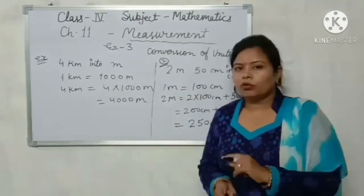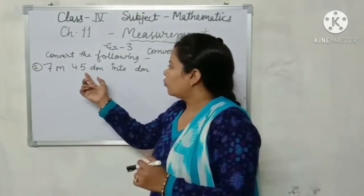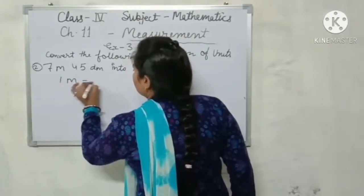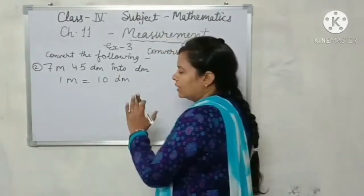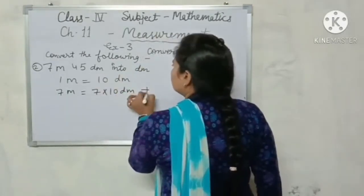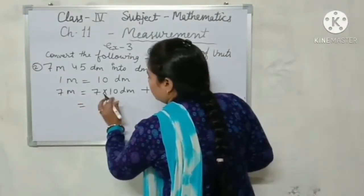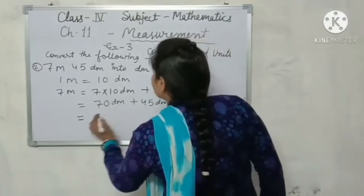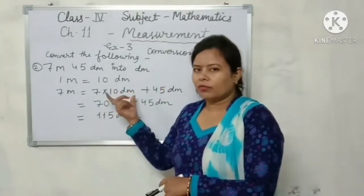So we do Exercise 3. In your notebook, write Exercise 3. Here is 7 meter 45 decimeter into decimeter. We need to convert to decimeter. So first of all, we write 1 meter equals 10 decimeters. So 7 meters equals 7 into 10 decimeters plus 45 decimeters. This is already in decimeters, so I wrote it directly. Now 10 into 7 is 70 decimeters plus 45 decimeters. So the answer is 115 decimeters.